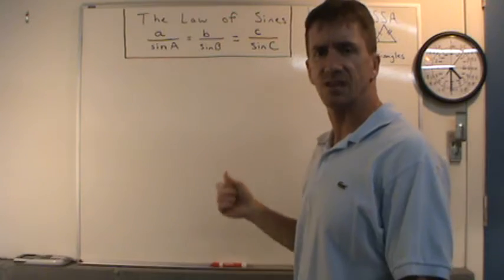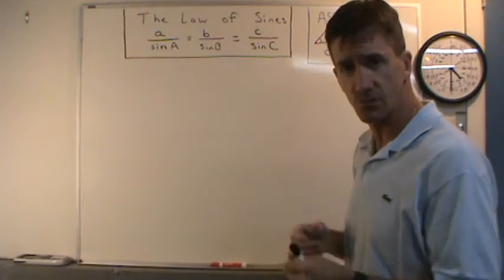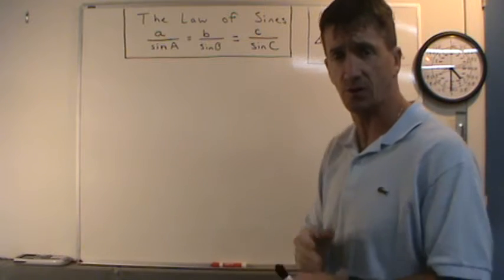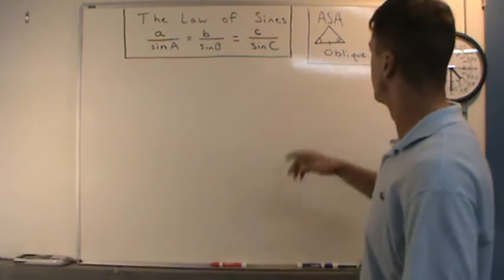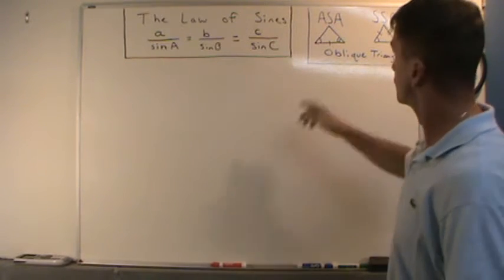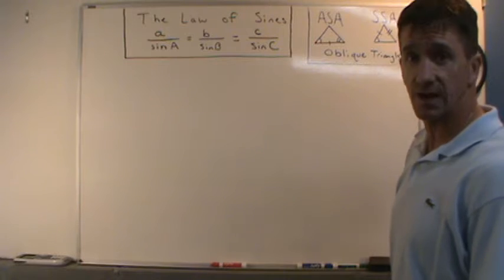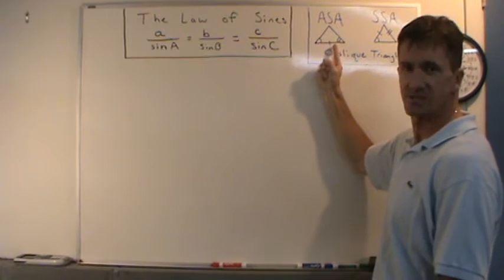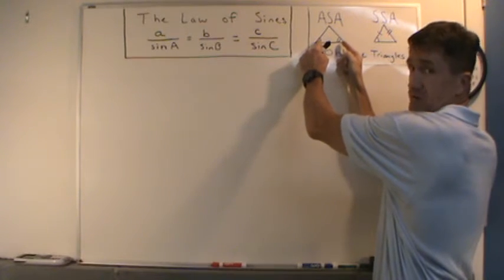Hi everyone, in this video I will discuss the law of sines. The law of sines is useful in solving oblique triangles — triangles that are not right triangles with that 90-degree angle. There are two scenarios where the law of sines is useful. The first is ASA, angle-side-angle, where you have two angles and an included side — the side between the two angles in the sketch.